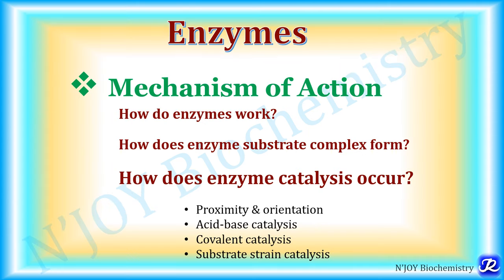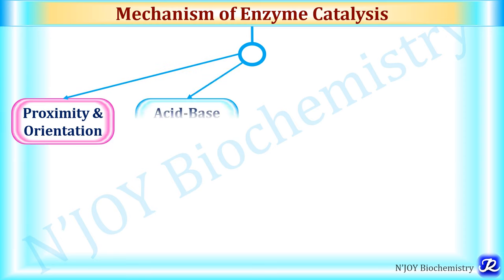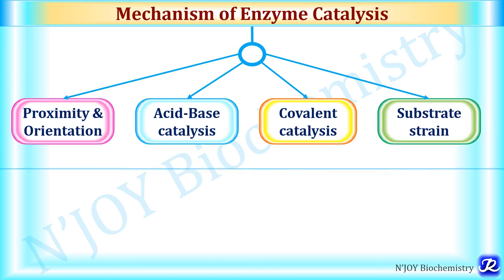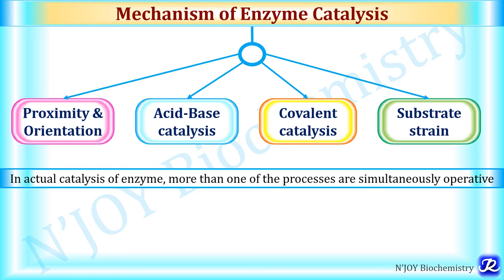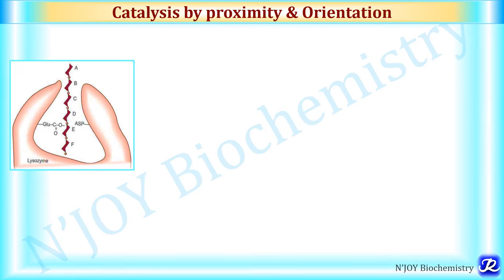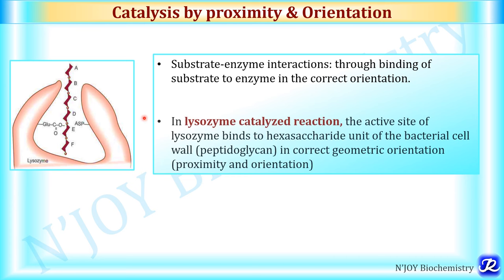Now we will see briefly how enzyme catalysis occurs. There are four mechanisms: catalysis by proximity and orientation, acid-base catalysis, covalent catalysis, and substrate strain catalysis. In actual catalysis, more than one of these processes may be simultaneously operative. In catalysis by proximity and orientation, the substrate-enzyme interaction occurs through binding of the substrate to the enzyme in the correct orientation.